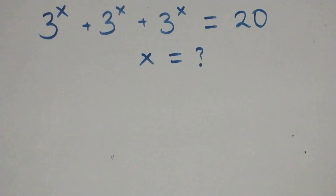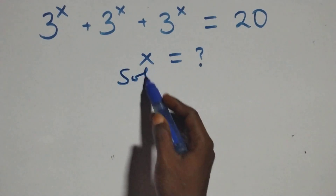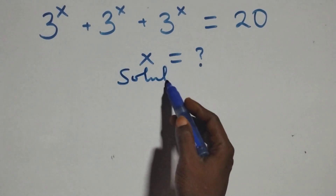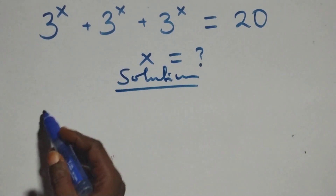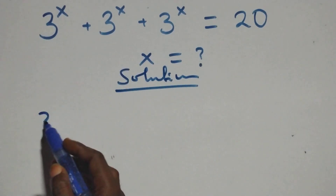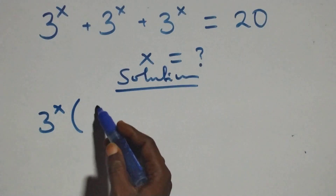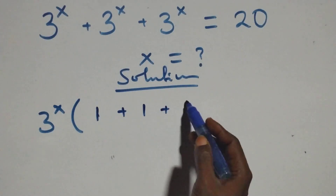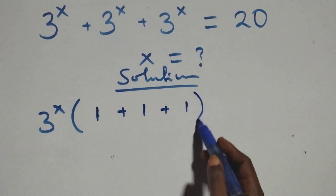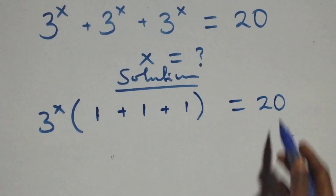Hello, you're welcome. Let's solve this nice exponential equation. What we have here: factor 3 raised to power x out, so we have 3 raised to power x, times the bracket 1 plus 1 plus 1, equals 20.